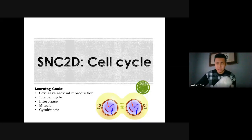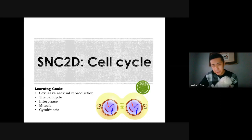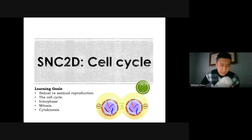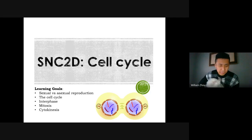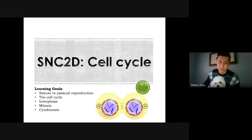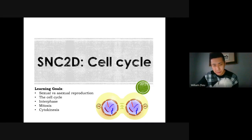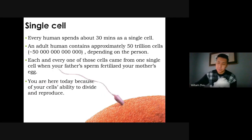We're going to learn about the cell cycle — starting with its purpose, which is for sexual and asexual reproduction, and then the details of the cell cycle: the three phases — interphase, mitosis, and cytokinesis.